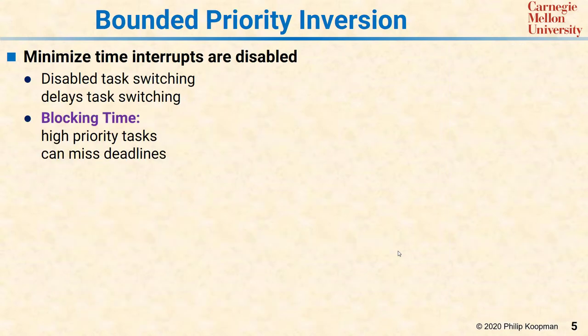Whether you're using disabled interrupts or mutex, you're solving concurrency problems by locking shared resources to avoid a race condition. But it brings with it some potential problems. The general concept is blocking time — the period of time in which the CPU is locked up either by disabling interrupts or using a mutex that prevents other tasks from running because they're waiting for that shared resource. The simplest heuristic is to minimize the time interrupts are disabled.